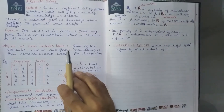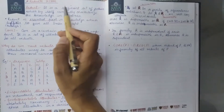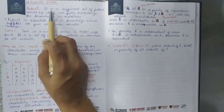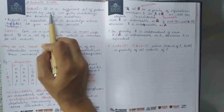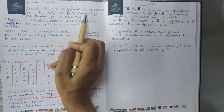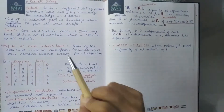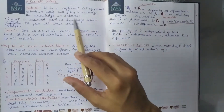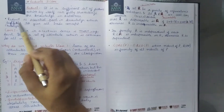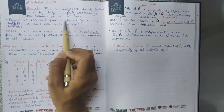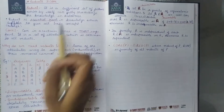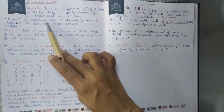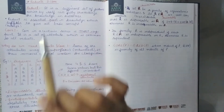Good morning students. In today's class we will learn about the next topic of Rough Set, that is Reducts and Core. A Reduct is a sufficient set of features which by itself can fully categorize the knowledge in a database. Reduct is an essential part of knowledge which is enough to give all basic concepts.